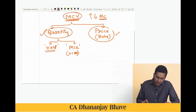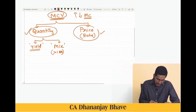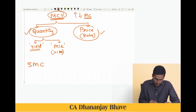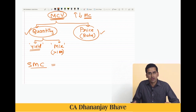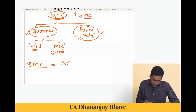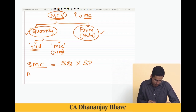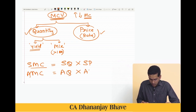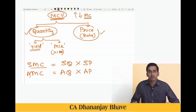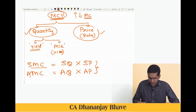Standard material cost is calculated as standard quantity multiplied by standard price. Actual material cost is actual quantity multiplied by actual price. The difference between these two is the material cost variance.